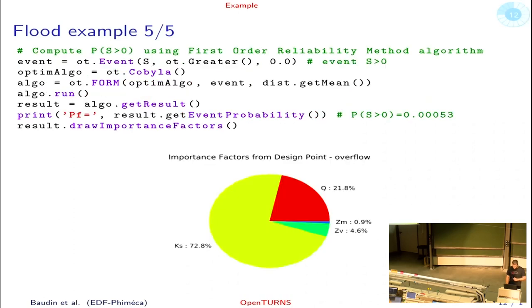Now that we have the S output variable, we just have to define our failure event, S being greater than 0, so that we can use an approximation algorithm to compute our probability of failure. It needs an optimization algorithm, the event, and a starting point for the optimization. And once we run that, we can access the probability.